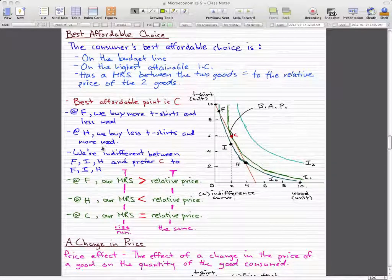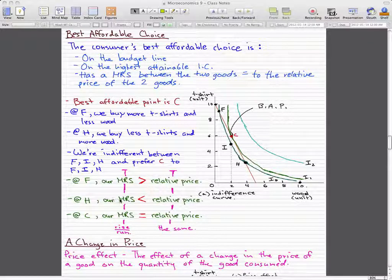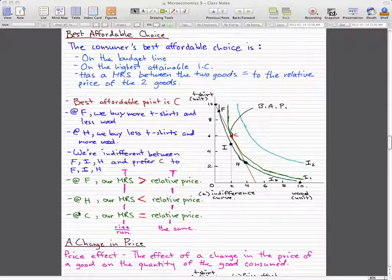So at point F, our marginal rate of substitution is greater than the relative price. At H, our marginal rate of substitution is less than the relative price. And at C, our marginal rate of substitution is equal to the relative price.